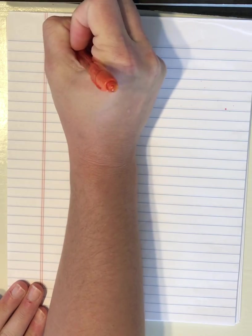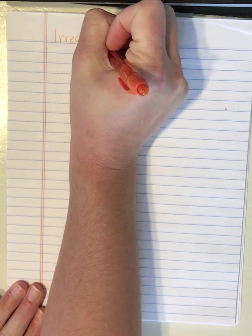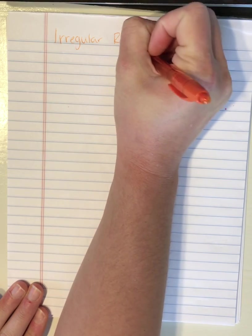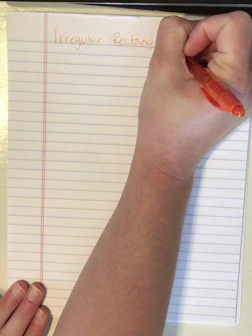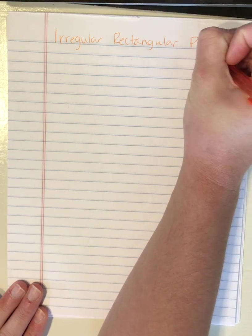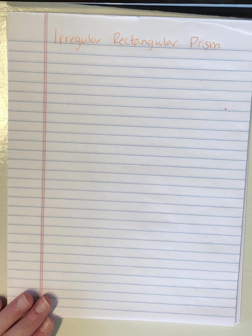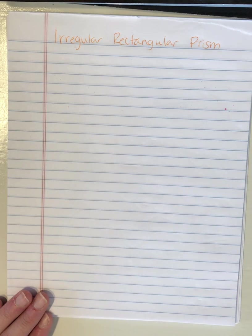Hey there scholars! It's Ms. Van Buren. I am back again to talk to you about irregular rectangular prisms. Yesterday we talked about the three easy steps to figure out the volume of an irregular rectangular prism. I'm going to review those quickly before we do two more practice problems.